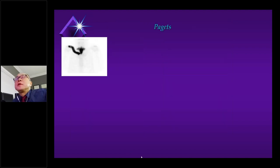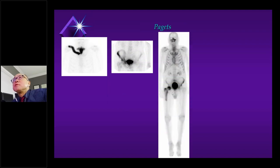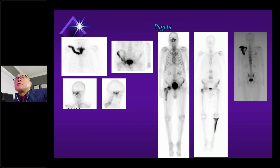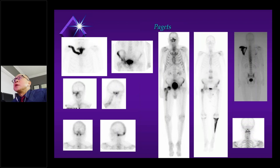Paget's disease is a fun pattern — essentially a game of 'name that bone.' If you can name a bone with diffuse, intense uptake, it's Paget's. For example: the manubrium, clavicle, right ilium, proximal femur with a uniform geographic pattern and sharp cutoff, proximal tibia, scapula, sphenoid bone with its greater and lesser wings, occipital bone including the occipital condyles, and the dens with its odontoid process — all very distinct.